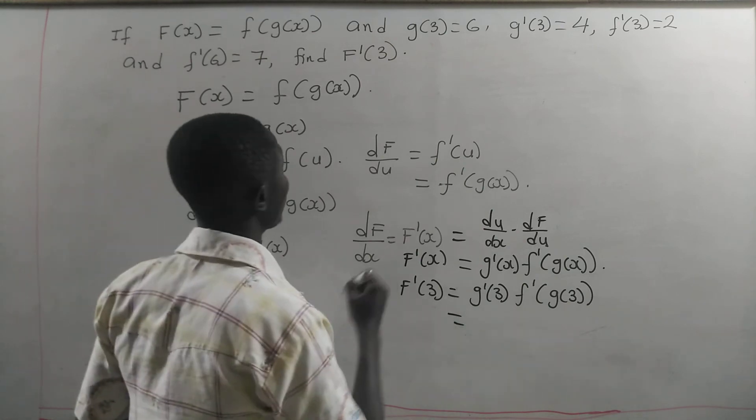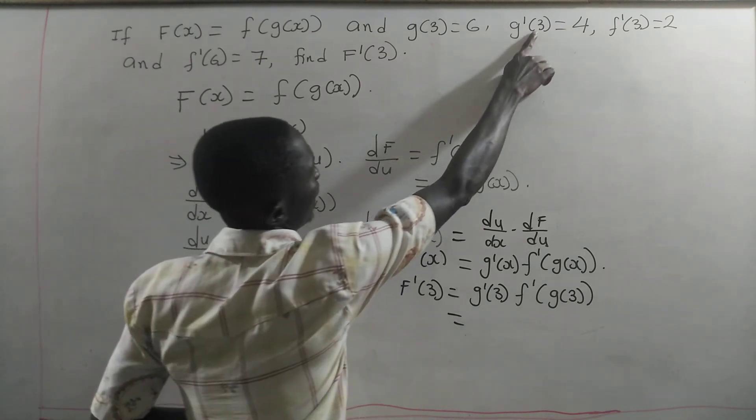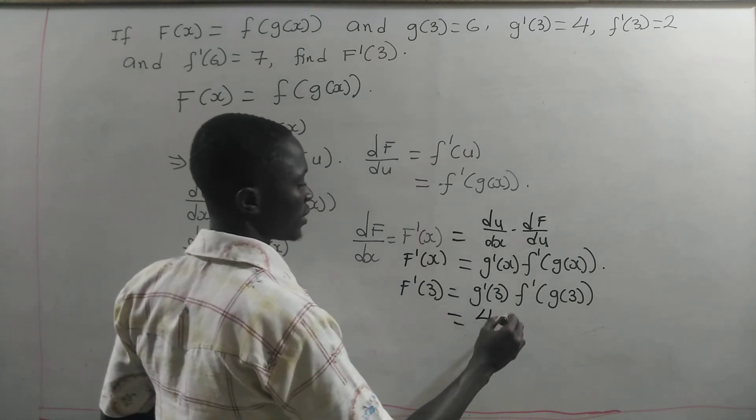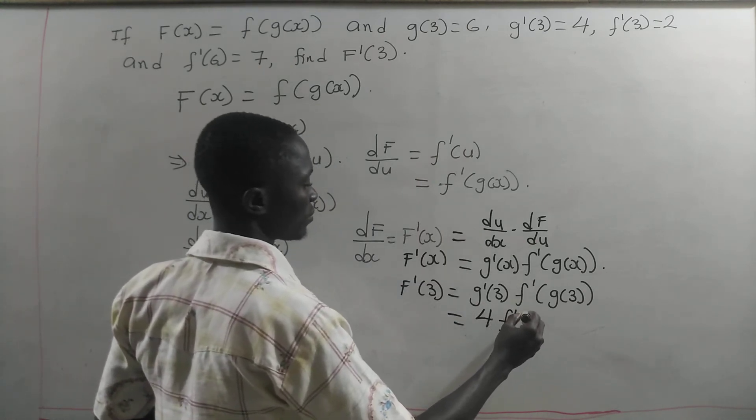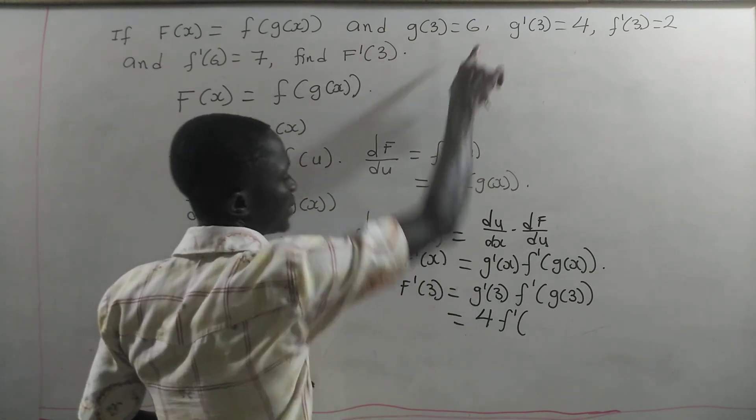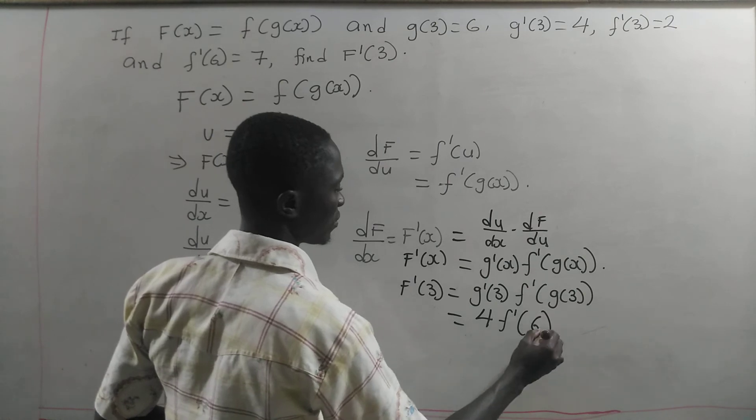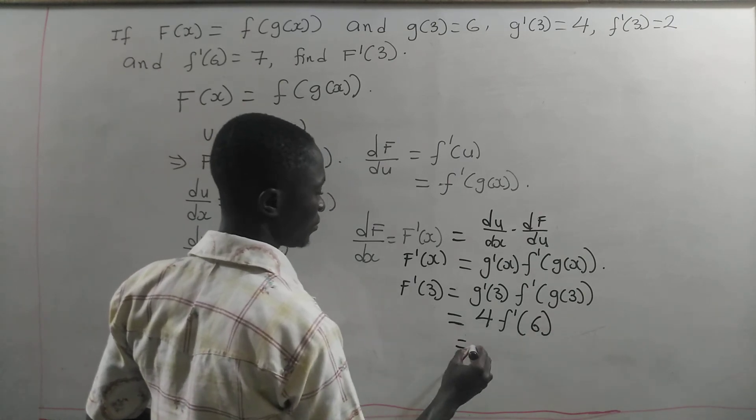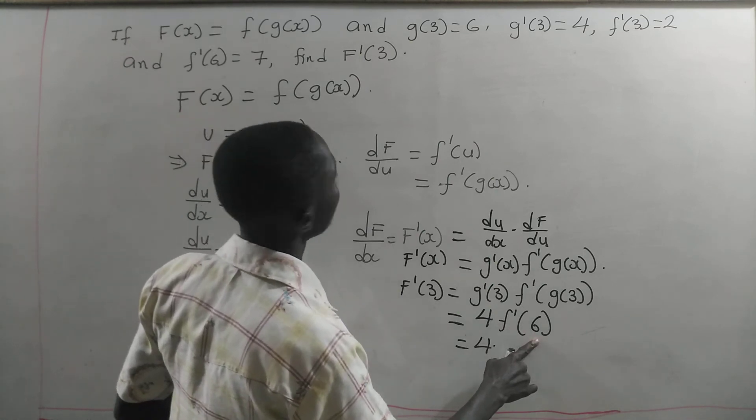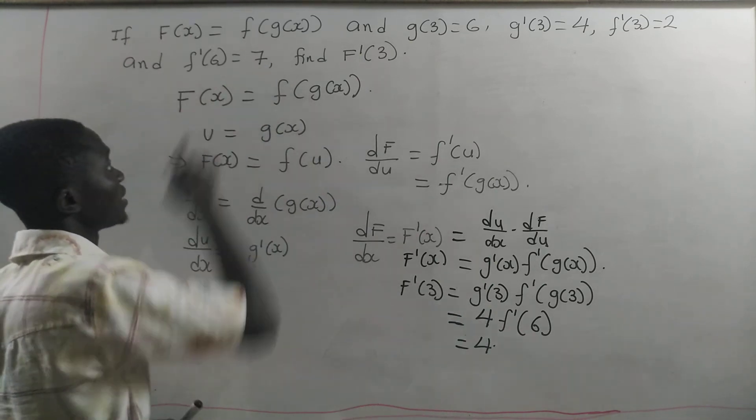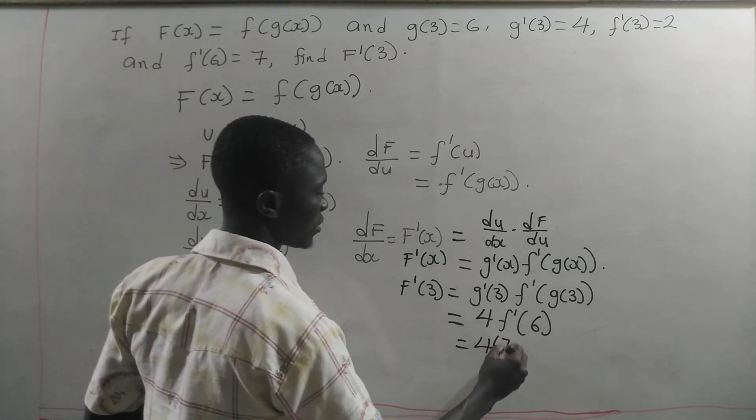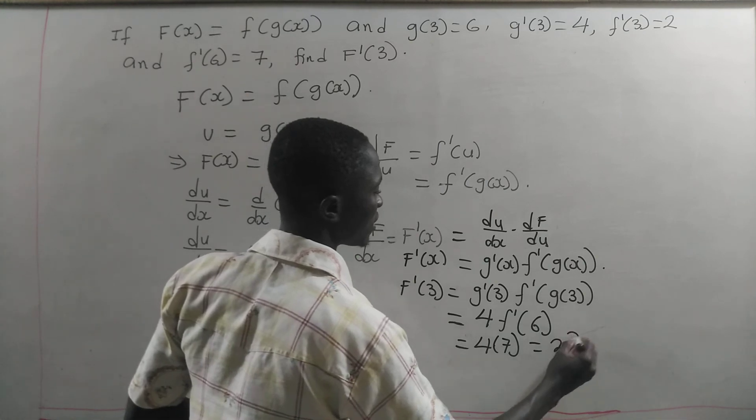Now, g prime of 3 is 4, so we put 4 there. Then we have f prime of g of 3. What is g of 3? g of 3 is 6. So we have 4 times f prime of 6. What is f prime of 6? f prime of 6 is 7, so we put the 7 there. And this will give us 28.